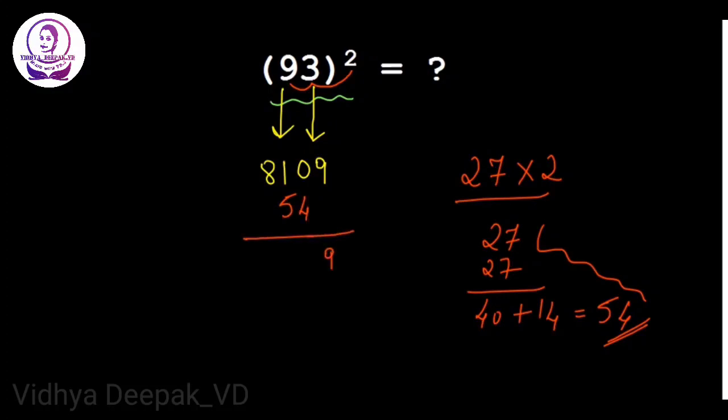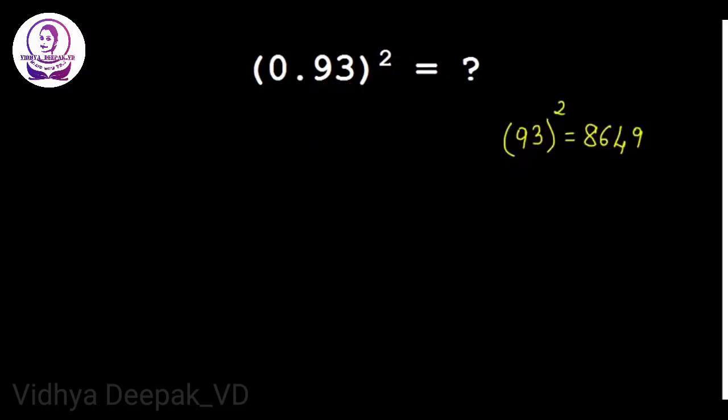So you can write that 54 here. What do you get? 9, 0 plus 4 is 4, 5 plus 1 is 6, 8. So your required answer is 8649.